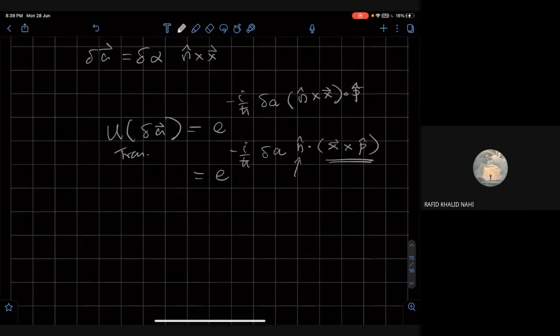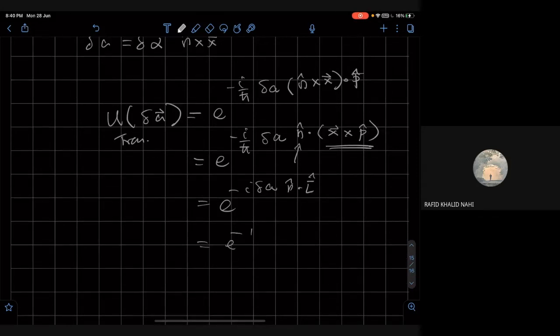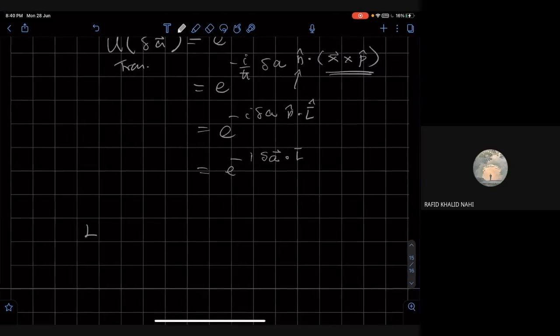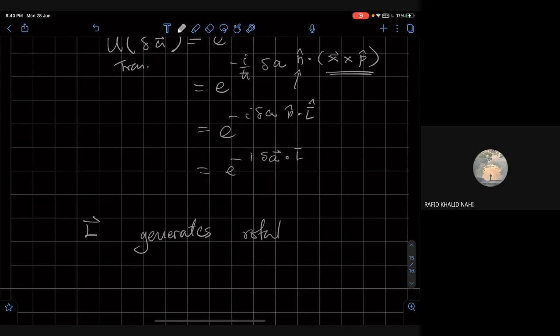But what is x cross p? This is nothing but L. So we can write this as e to the power minus i, delta A, n dot L, where L, this is an operator now. So this is going to be e to the power minus i, delta A, the vector dot L. Right? So we see that translation around a circle, that is rotation of an object from an axis, about an axis outside its body, is generated by the orbital angular momentum operator. So L generates rotation about an axis outside the object.